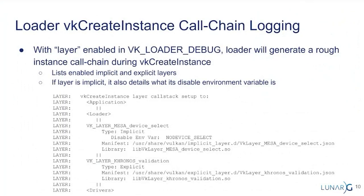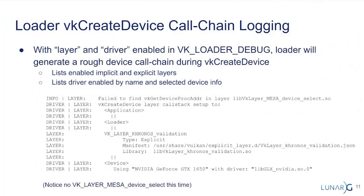One other thing I've added: like the instance call chain I showed you at the beginning with all the layers listed, I've started trying to dump out information on what layers were found during discovery. In this case, you can see that device select and validation are inside that call chain, so you can know that if there's a problem, one of those layers is likely going to be the issue. I've also added that whenever you do a create device, it creates a call chain and now lists the driver details at the bottom, so you will know which graphics device the application is using as part of its rendering.